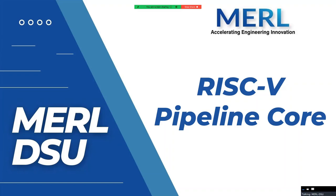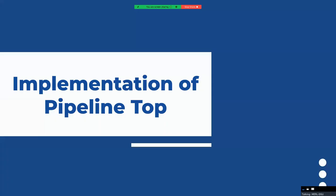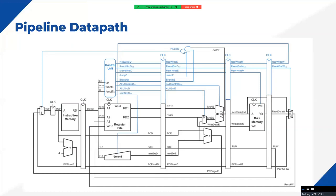Hello, welcome to the seventh lecture of the designing and implementation of a 5-stage pipeline. In the previous lecture we implemented the top module of the writeback cycle, and in earlier lectures we implemented each of the cycle modules: fetch, decode, execute, memory, and writeback. In today's lecture we are going to connect all those individual cycle top modules and combine them into our top module, which we'll call the pipeline top. We'll run some simulations to verify whether our pipeline implementation is working correctly, identify possible errors, and discuss solutions.